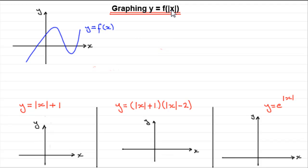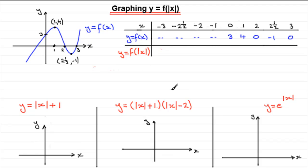If we have to graph y equals f of mod x — and I've got some examples down here which I'm going to ask you to have a go at, and I'll show you the solutions as well — let's explain what actually happens. To do this, if we take a general graph and bring up a table of values, I've said that this graph goes through 0,3, peaks at 1,4, crosses the x-axis at 2,0, bottoms out at 2.1, and crosses the x-axis at 3,0. I've put these values in the table for x going from minus 3 to 3, with y values in blue. You'll notice I've ignored this stretch down here — you'll see why in a moment.